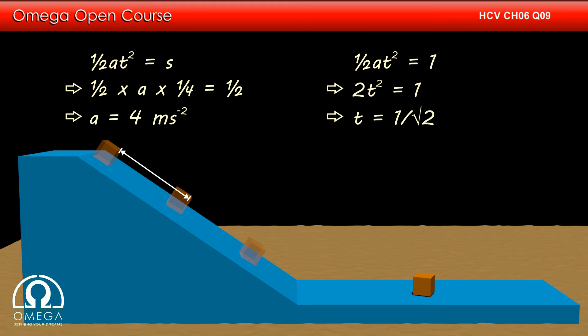Now the body takes half second to travel its first half meter and 1 by root 2 seconds to travel 1 meter. So the time taken to travel second half meter is the difference of these two times, 1 by root 2 minus 1 by 2, which equals 0.21 seconds. This is our answer.